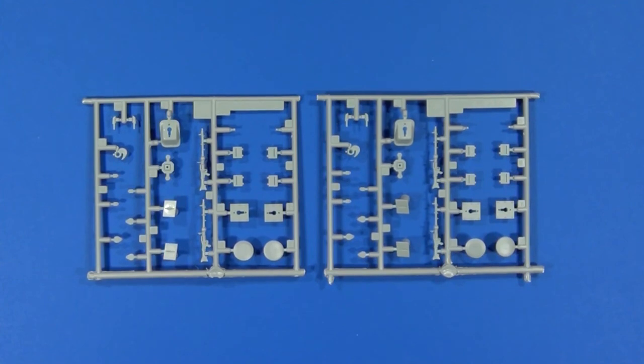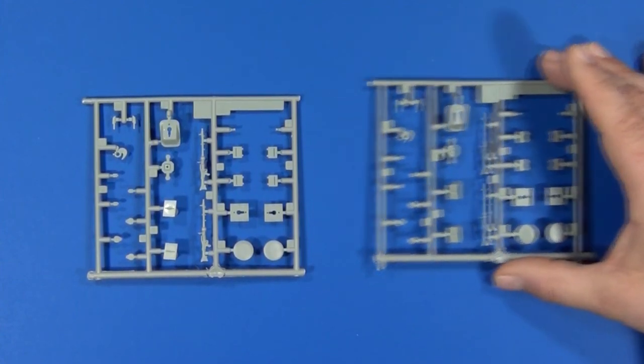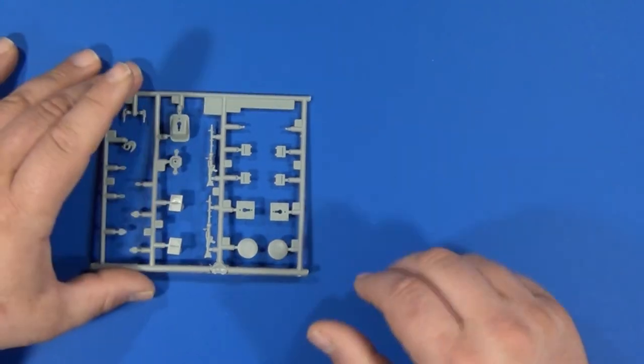These two sprues are letter C and they contain the four MG 34s.